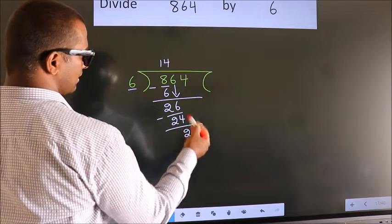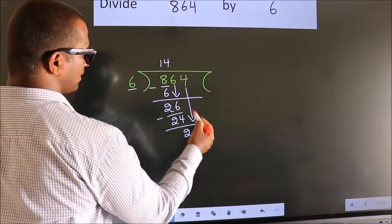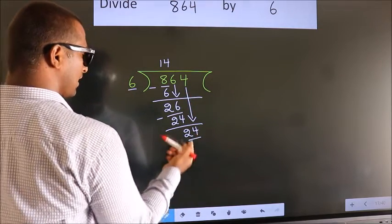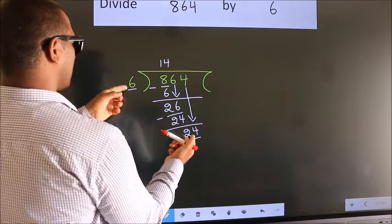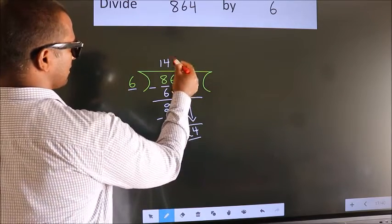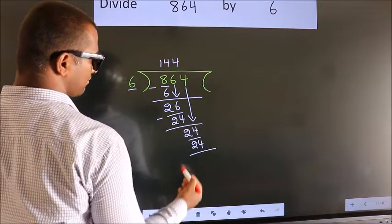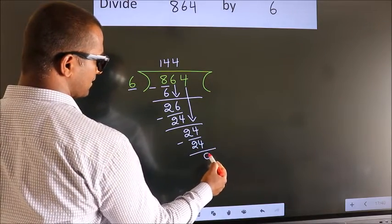After this, bring down the beside number. So, 4 down. That gives us 24. When do we get 24 in the 6 table? 6 fours is 24. Now we subtract. We get 0.